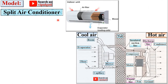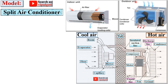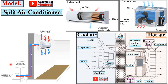Now the model of the split air conditioner: this portion is the indoor portion — inside the room — and this is the outdoor unit, outside the room. The main component of the indoor unit is the evaporator, which is why the indoor unit is sometimes known as the evaporator. The condenser is the main component of the outdoor unit, which is why it is also called the condenser unit.